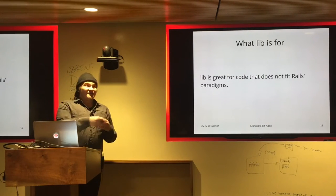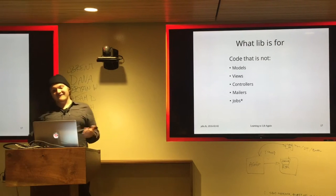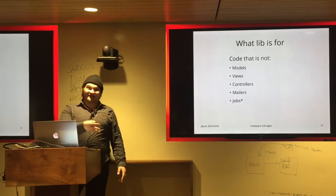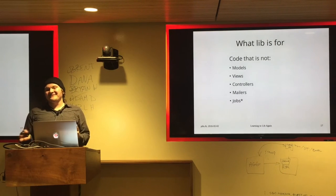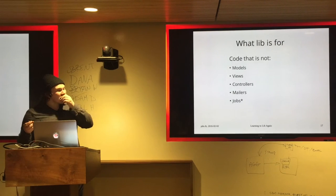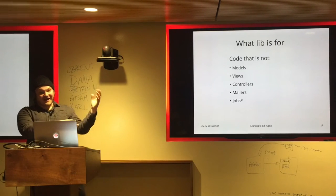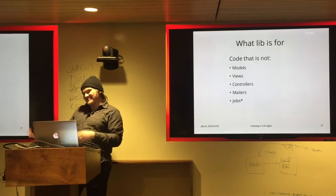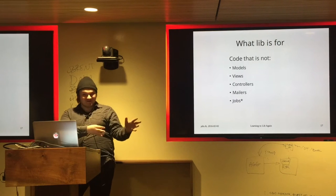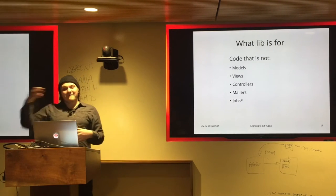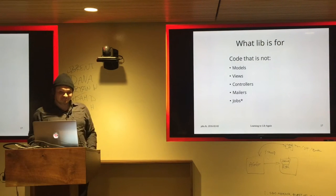The lib directory is really great for code that does not fit into Rails paradigms — things that are not models, views, controllers, mailers, or jobs. You may be thinking that's pretty much everything you need to build a web app, and you're not wrong. Those serve their purposes very well. But the lib directory is for anything that's not that, and we'll talk about examples of code that doesn't fit.